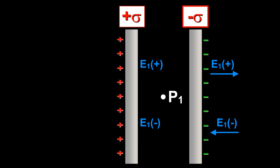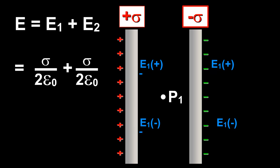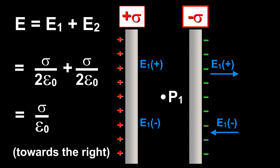The resultant field at P1 is E = E1 + E2, that is equal to σ/(2ε₀) + σ/(2ε₀), which equals σ/ε₀ towards the right.